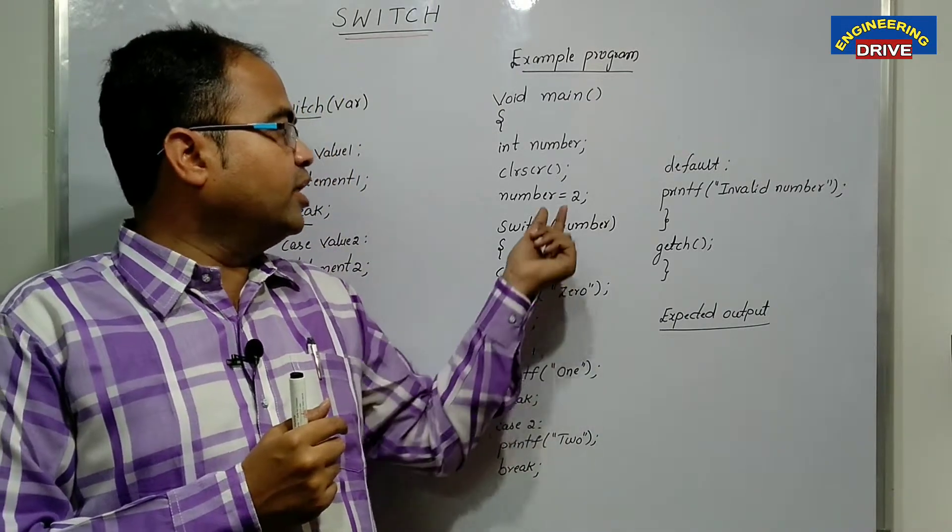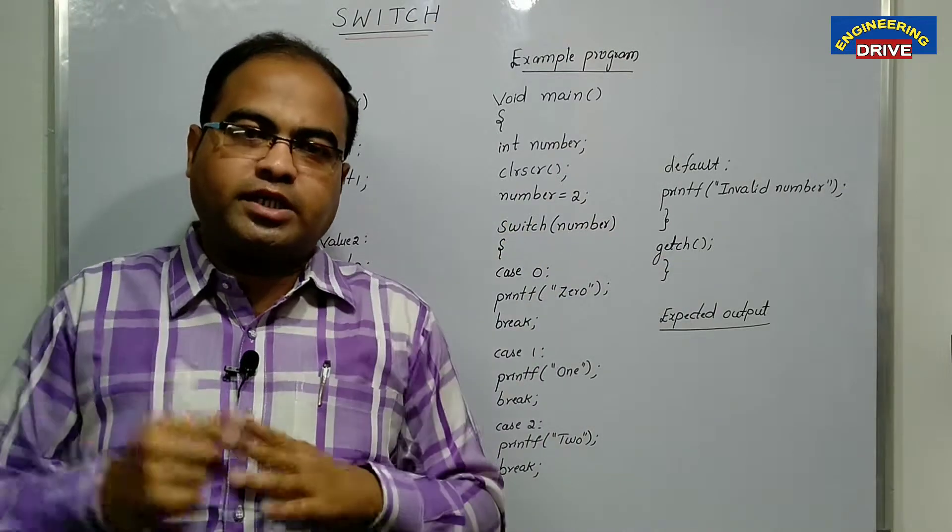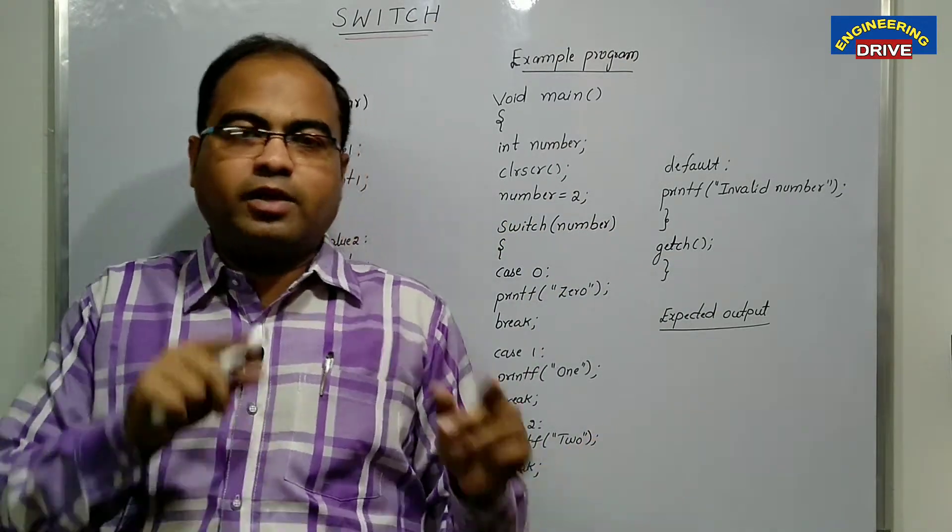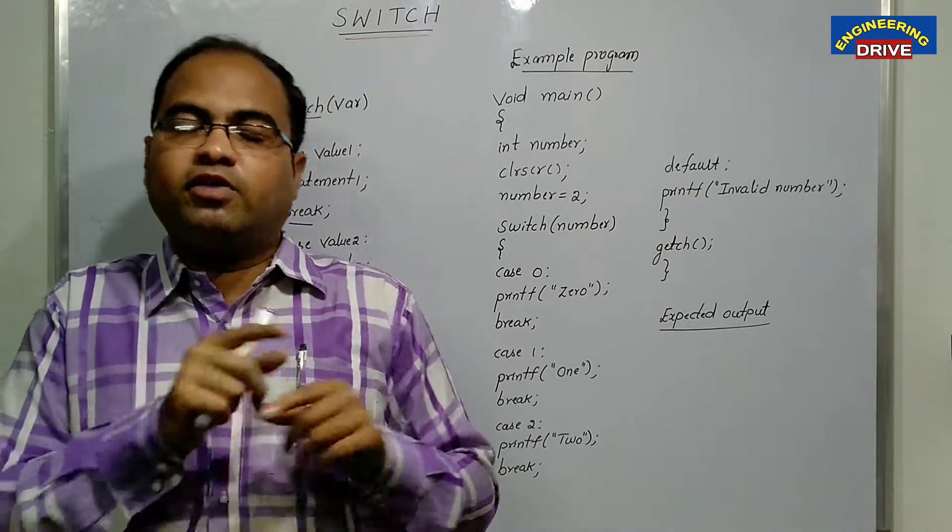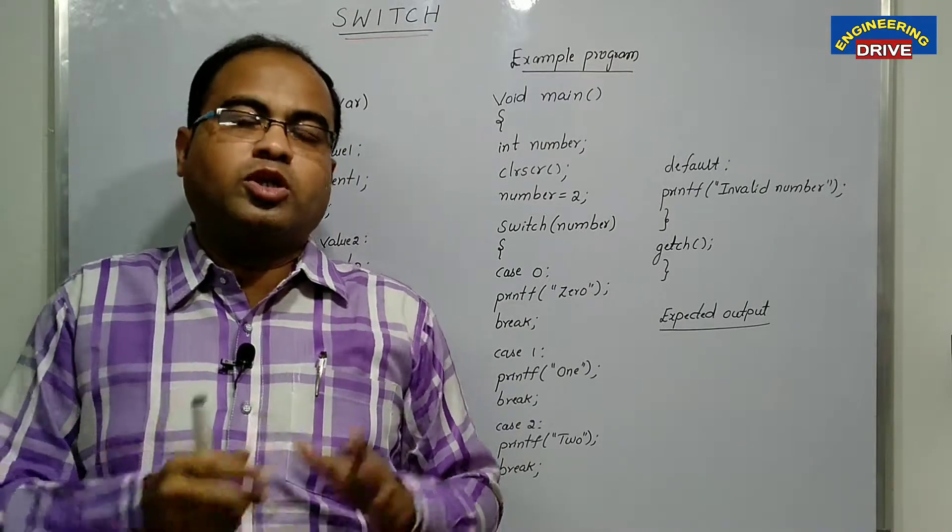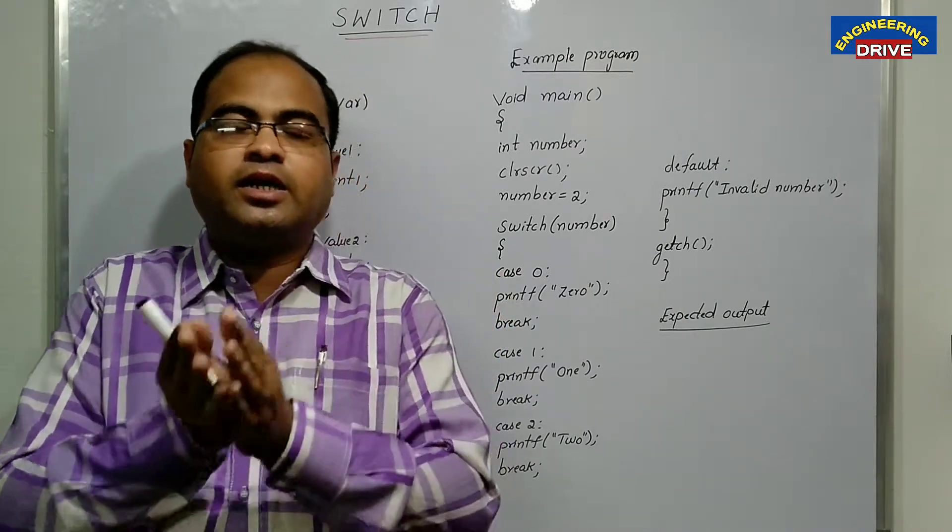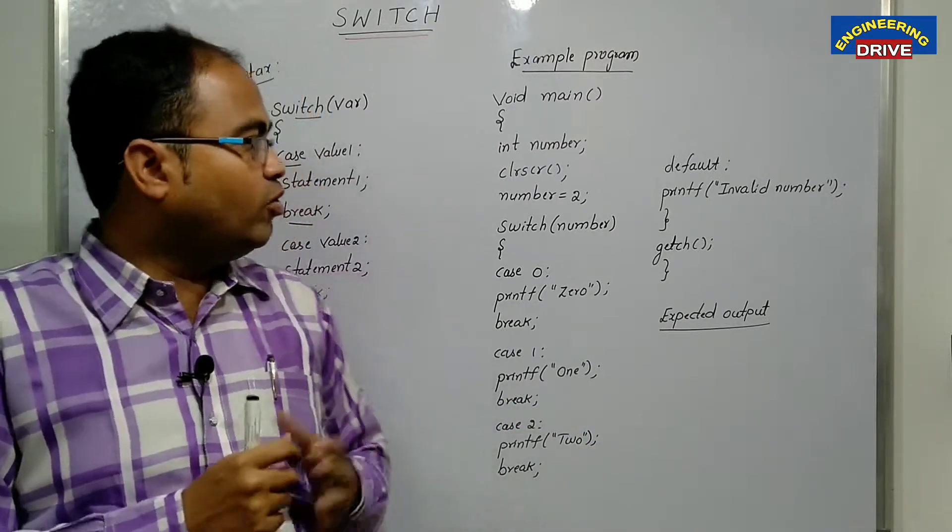For example, suppose if I enter zero, then I should get Z E R O on the screen. If I give the value of the variable one, one number one, then I should get one. If I give the value, let us say two, then I should get the output T W O two. So I want to convert the numbers in word format or in your letters format. So how I can do, how I can write that program.